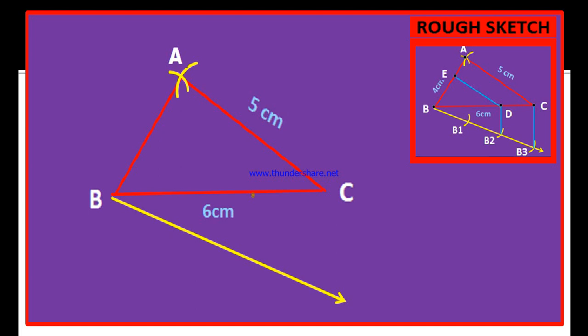Because the given ratio or the given fraction is 2/3 where the denominator is 3. Therefore, on this ray BX, let us draw 3 arcs with same radii. This is 1 arc, this is the 2nd arc and it is the 3rd arc. Now, let us name them. This point B1, this point of intersection is B2, this point of intersection is B3.